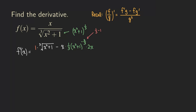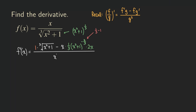And that's all for the numerator. For the bottom, we do not need to take any derivatives — we are just going to square the bottom function. Based on the rules of exponents, squaring x squared plus 1 to the 1 over 3 gives us x squared plus 1 to the 2 over 3 power.